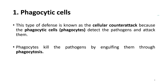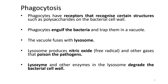The first type is the phagocytic cell, also known as the cellular counterattack. Phagocytic cells, also called phagocytes, detect pathogens and attack them. Phagocytes kill pathogens by engulfing them through a process called phagocytosis. Phagocytosis involves phagocytes that have receptors able to recognize certain structures, such as polysaccharides on the bacterial cell wall.